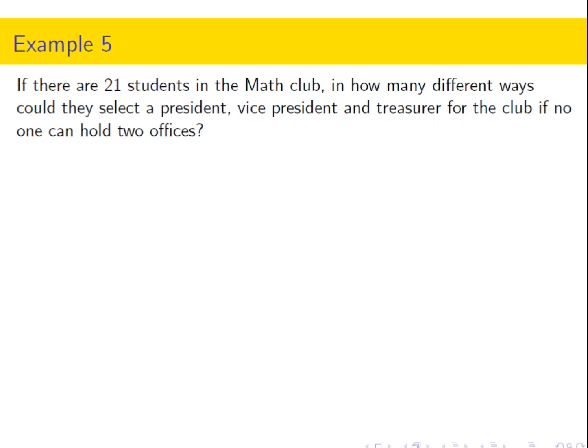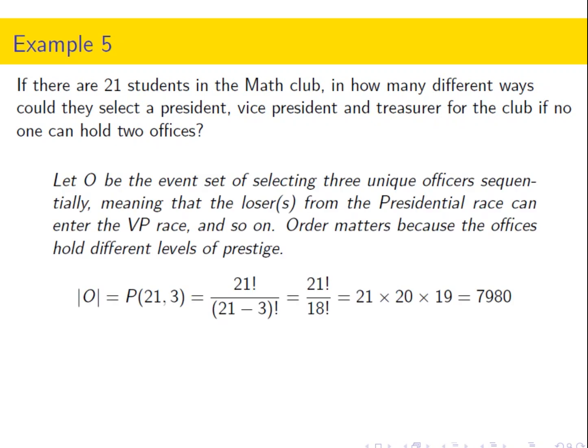For 21 students in math club, how many different ways could the math club select a president, vice president, and treasurer if no one can hold two offices? Think about why this is permutations — order matters. If you're elected first, you're president; if you're elected second, you're vice president. So we use 21 permute 3, which is 21 × 20 × 19 = 7,980.